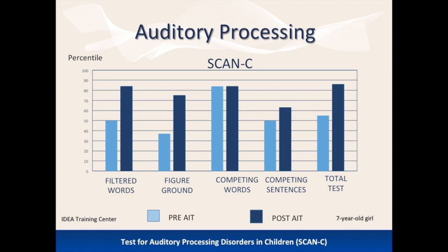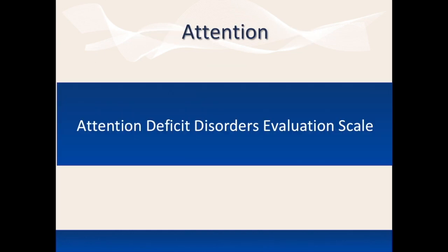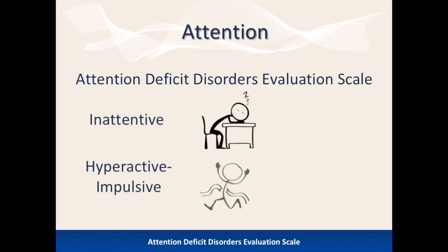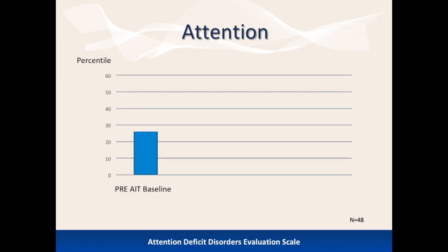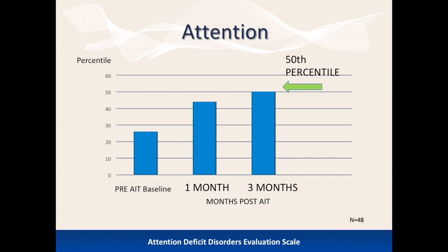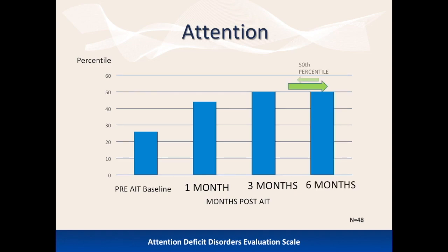The Attention Deficit Disorders Evaluation Scale was used in a study with 48 subjects. This test measures if the individual is inattentive and hyperactive-impulsive. The graph shows these children scored at the 26th percentile prior to AIT. Rapid improvement was seen in the first three months, with the median percentile reaching the 50th percentile—a gain of 24 percentile points. The improvements were maintained at least through six months, the point of the last evaluation.